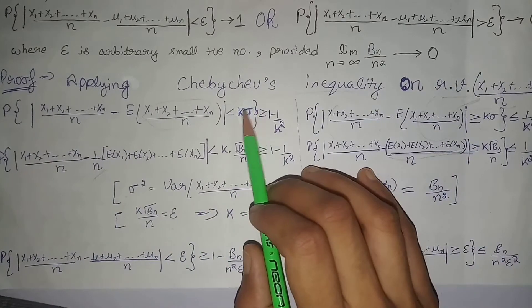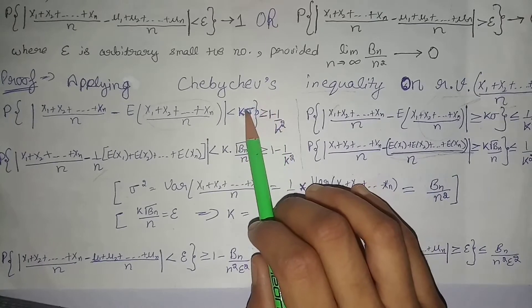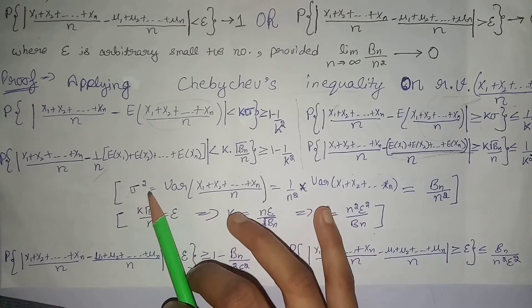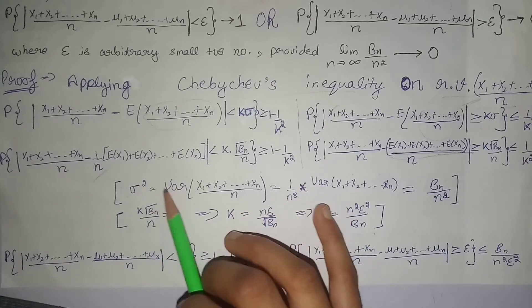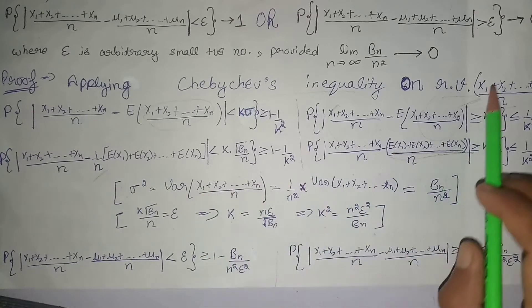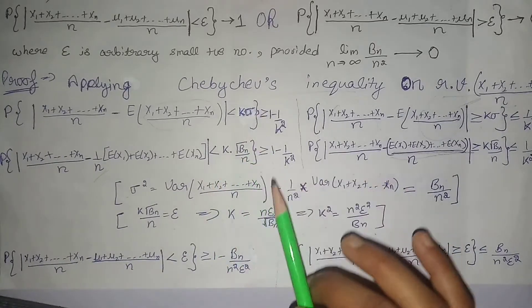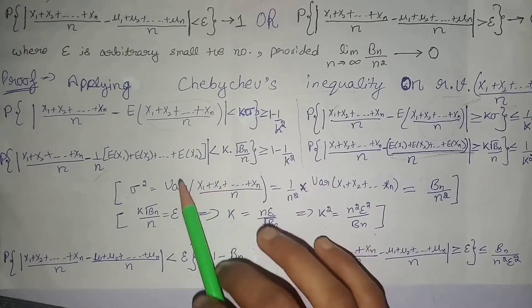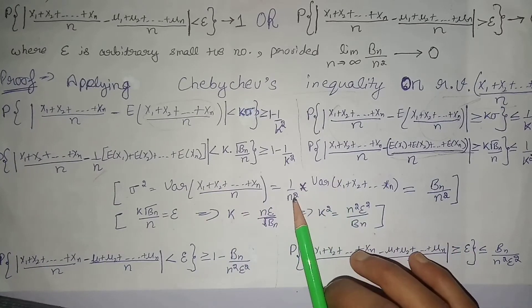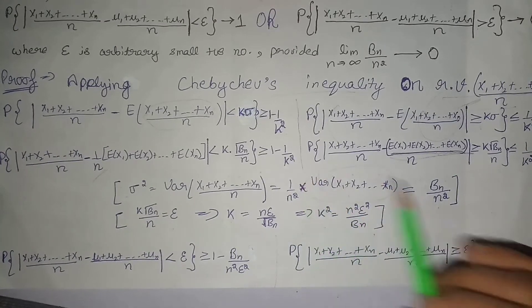Next, here we want the standard deviation, that is sigma. To find sigma, first we find sigma square, which is also called variance, then we take its square root. Variance of this random variable will be 1 by n square times the variance of x1 plus x2 up to xn. This term is equal to bn, which we put here.